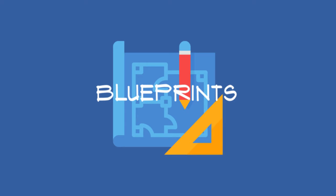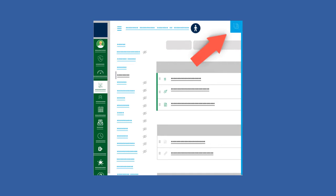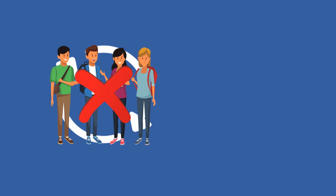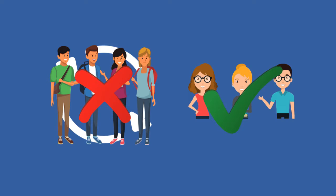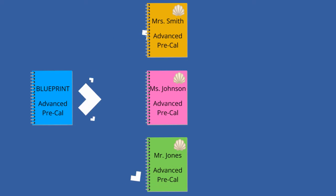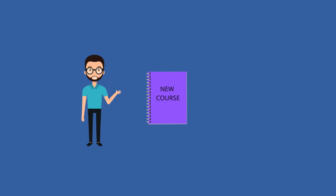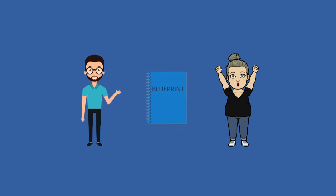A blueprint is a special type of Canvas course that you will recognize by the blue tab in the upper right corner of the screen when you're in it. A blueprint can never have any students enrolled in it but can have multiple teachers. In a blueprint, you build course content that can then be synced with multiple shell courses. While teachers cannot create blueprints on their own, they can create a new blank course, build content in it, and then have their DLC convert it to a blueprint whenever they're ready.